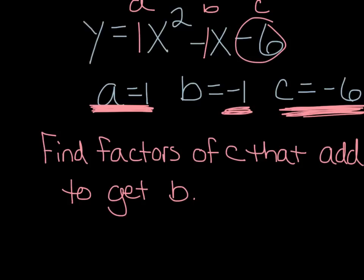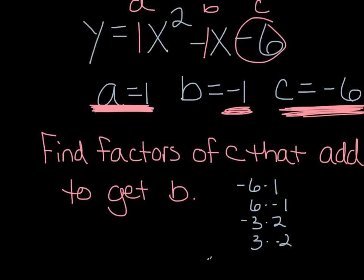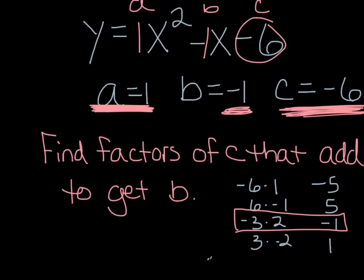So in this case c is negative 6. If we make a factor list — you can do this in your head or on paper — we'd have negative 6 times 1, or positive 6 times negative 1, or negative 3 times 2, or positive 3 times negative 2. Adding each pair: negative 6 plus 1 is negative 5, 6 minus 1 is positive 5, negative 3 plus 2 is negative 1, and 3 minus 2 is positive 1. We want the pair that adds to negative 1, so we want negative 3 and positive 2.